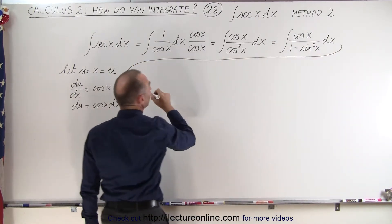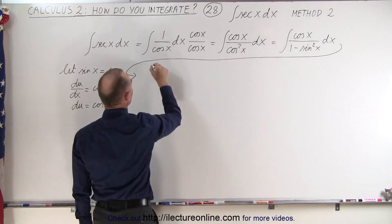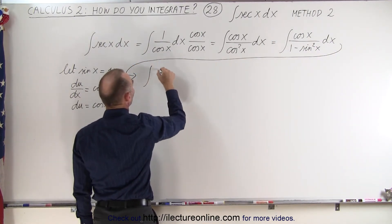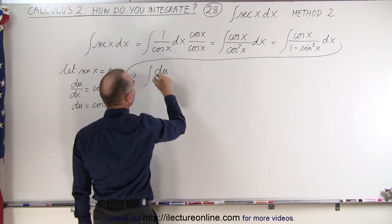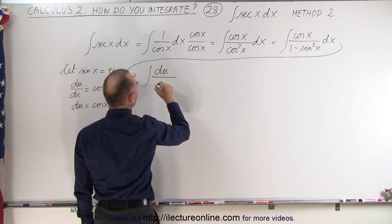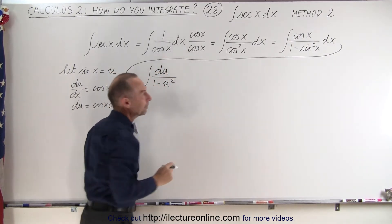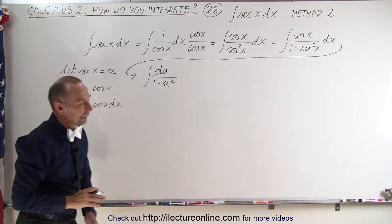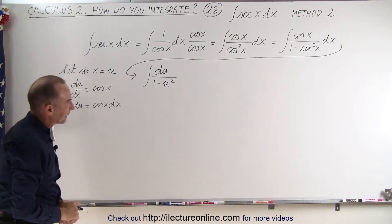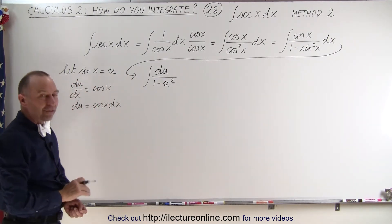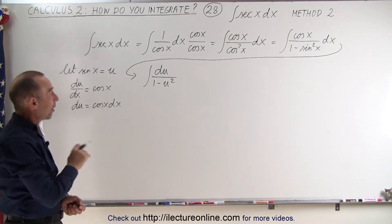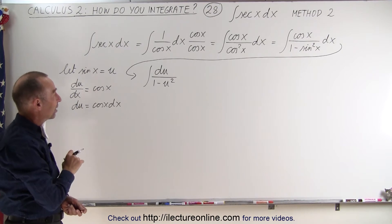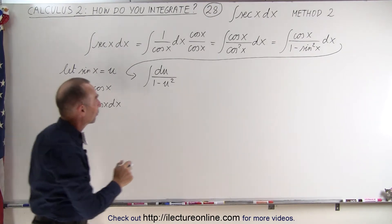This now becomes the integral of du in the numerator divided by 1 minus u squared in the denominator. We have the difference of squares, so we can use the partial fraction technique to do that.